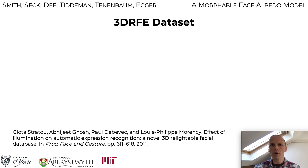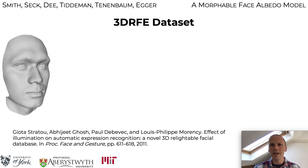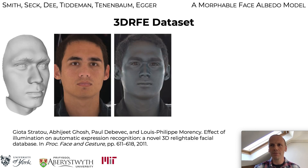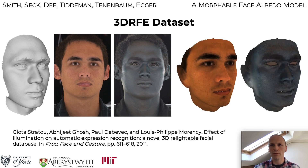This provides us with seamless ear-to-ear complete albedo maps in dense correspondence via the template mesh. We augment our own dataset with the 3D RFE dataset of Strato et al., which provides geometry and single-view diffuse and specular albedo maps. We again warp the template mesh to the raw geometry and sample the albedo maps onto the mesh.